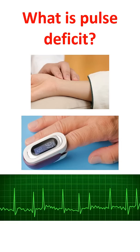In atrial fibrillation, the atria are electrically activated at a very fast rate of the order of 450 to 600 per minute. Proper organized contraction of the atria cannot occur at such a fast rate, and the electrical activity of the atria in atrial fibrillation is highly disorganized. Hence, the atria are practically at standstill.